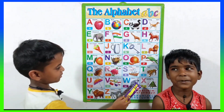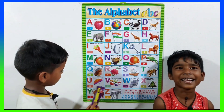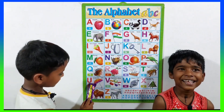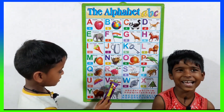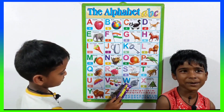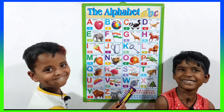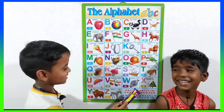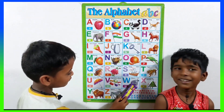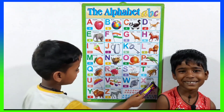S for sheep. T for tiger. U for umbrella. V for vegetable. W for what. X for X-ray.